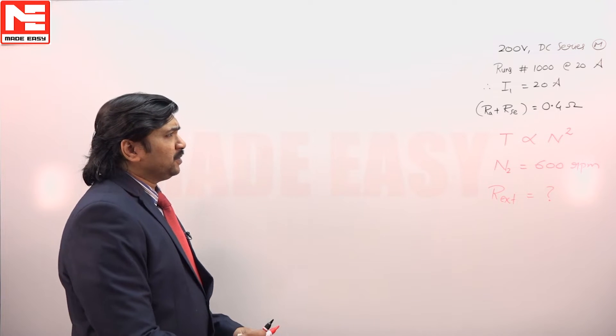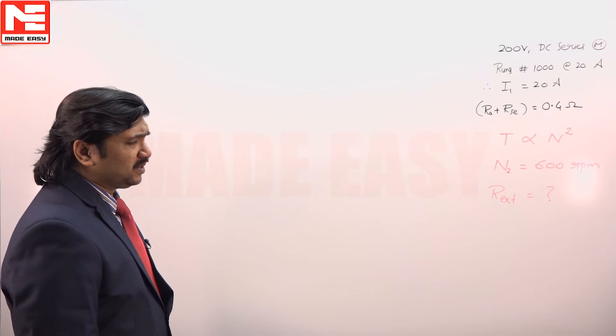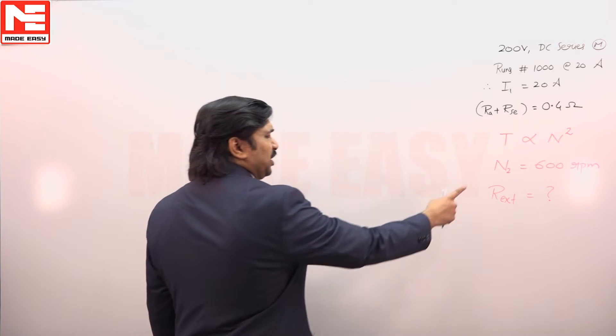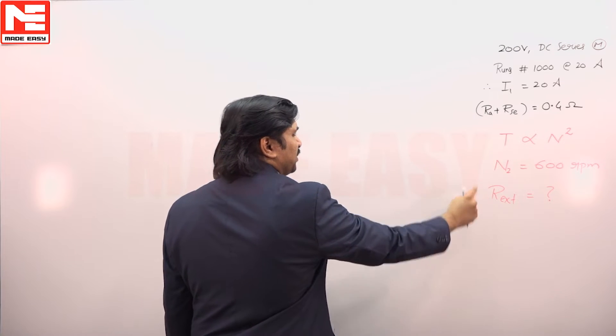It was given series motor drawing 20 amperes running at a speed 1000. Reduce the speed to N2 that is 600 by adding some extra resistance in series with the armature.